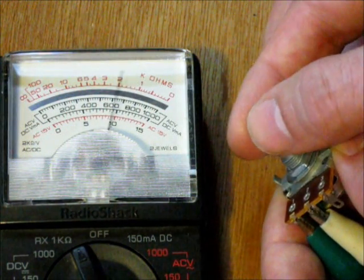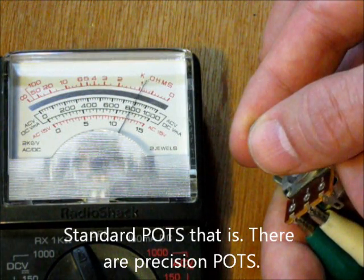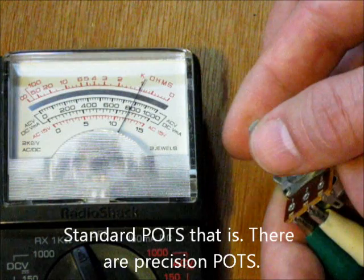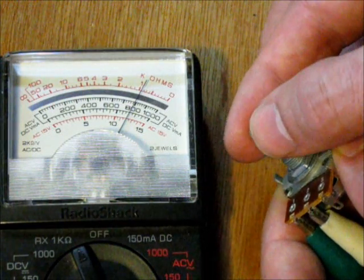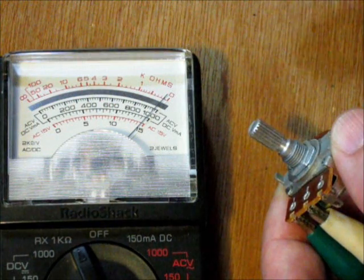There's a little bit of a jump. Variable resistors are not precise, as you can see. And there's about 1,000 ohms. And I can turn it all the way down to near zero.